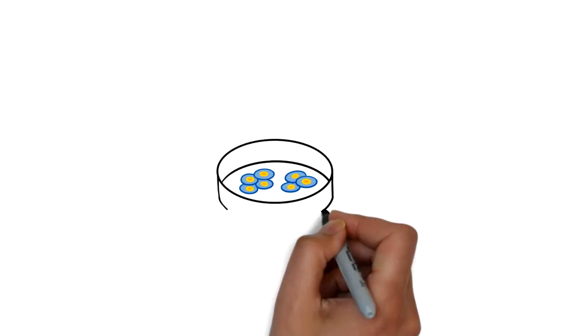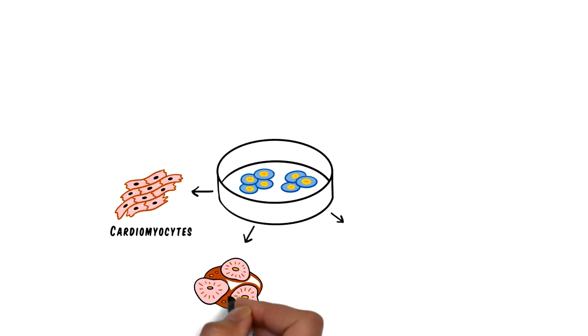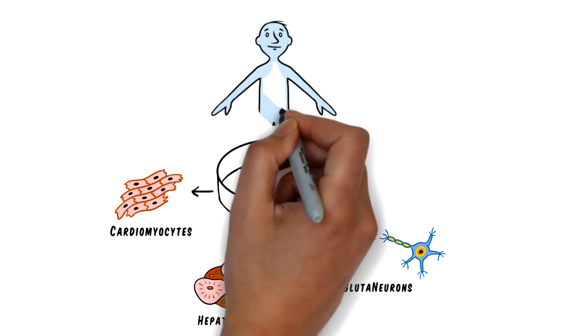iCell Glutoneurons are human biology in a dish. They are efficient, robust, and relevant.